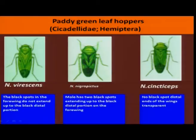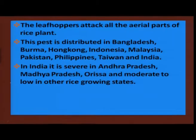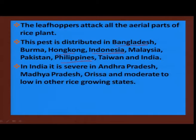The next in order is green leaf hoppers, which are a very regular pest on paddy. There are three species identified, with more than one species coexisting; Nephotettix virescens is more dominating among the three species. These green leaf hoppers are a serious pest in almost all paddy growing areas across the globe — Bangladesh, Indonesia, Hong Kong, Philippines — and in India they are particularly serious in Andhra Pradesh, Madhya Pradesh and Orissa, while their intensity is moderate in other paddy growing states.